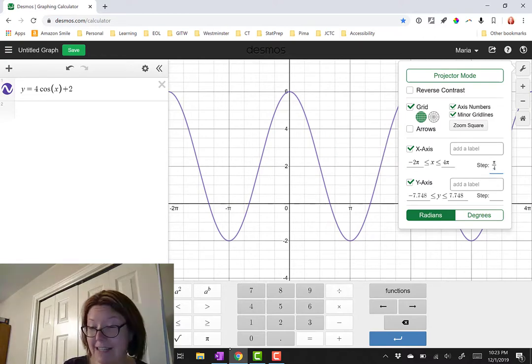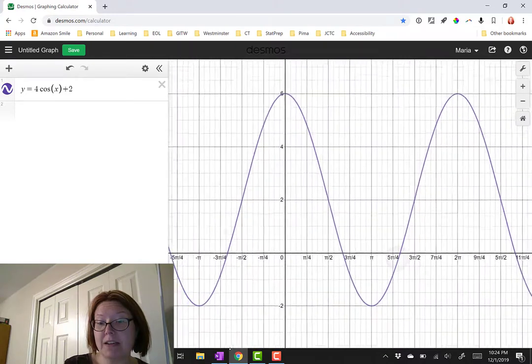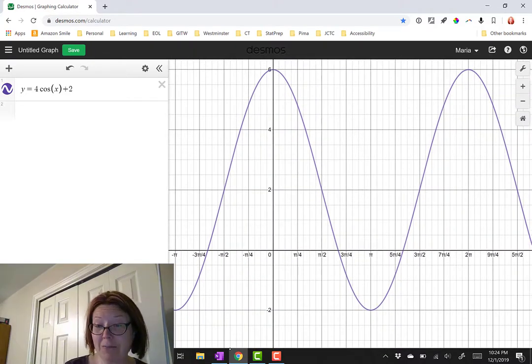Now I might not see the divided by 4s. As I zoom in and out, you'll see the graph continue to scale by multiples of pi.